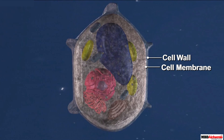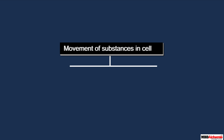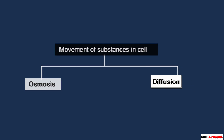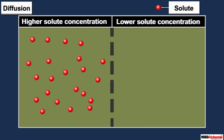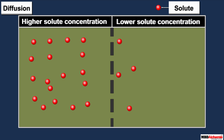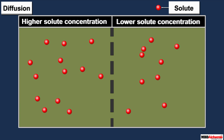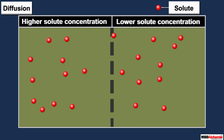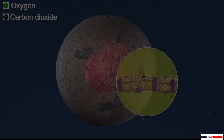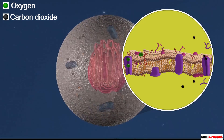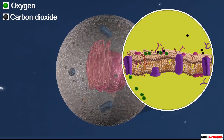Now that we know about the cell wall and the cell membrane, let us see how different substances move across a cell. The movement of substances in and out of the cell occurs by two different processes: osmosis and diffusion. Diffusion is the movement of substances from a region of higher solute concentration to a region of lower solute concentration. Substances such as carbon dioxide and oxygen move across the cell membrane by the process of diffusion.